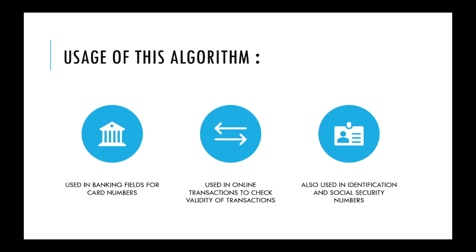This algorithm is used everywhere. Did you ever wonder where the numbers you see on credit cards, debit cards, ATM cards, or IBAN numbers came from? This algorithm is used to generate those numbers, and they are not random numbers. Those numbers are very unique — no two persons can have the same numbers. These numbers are issued to you only if they pass this algorithm, which is known as Luhn's algorithm.